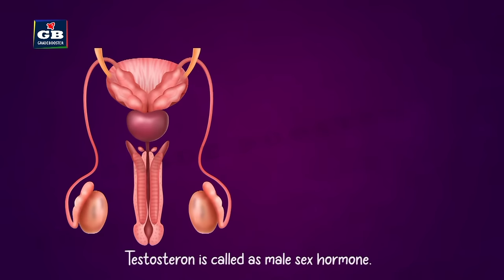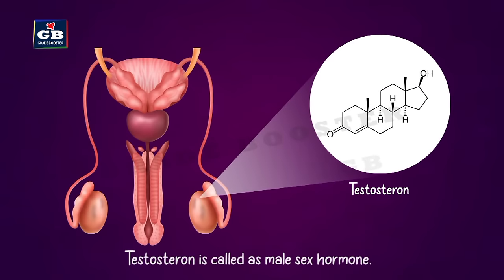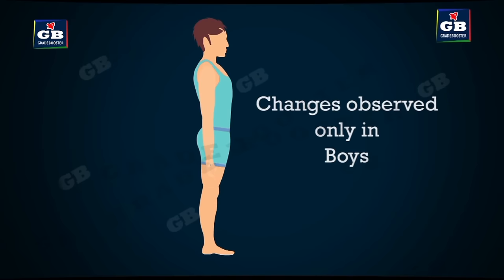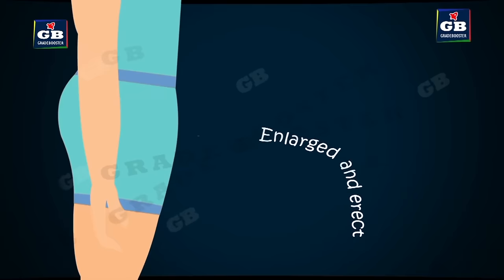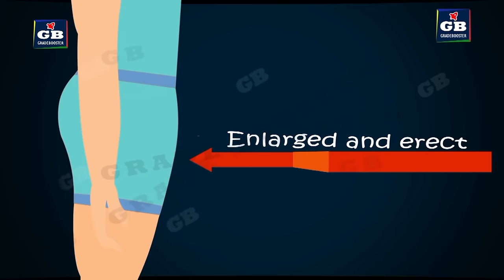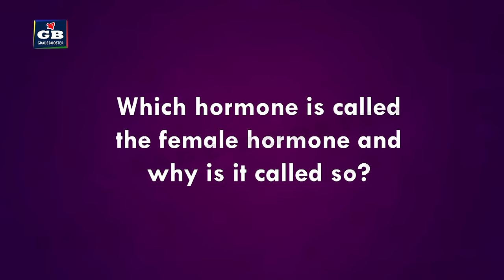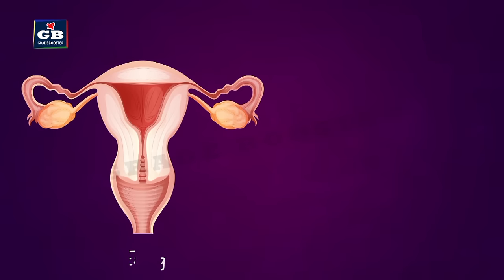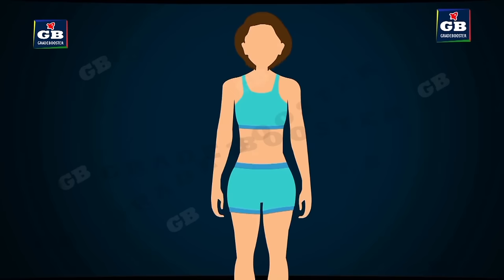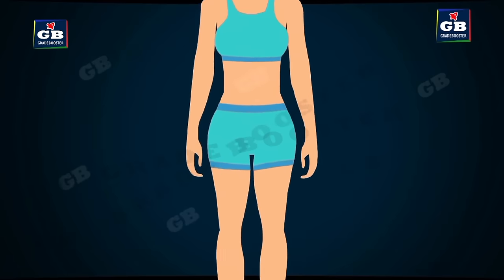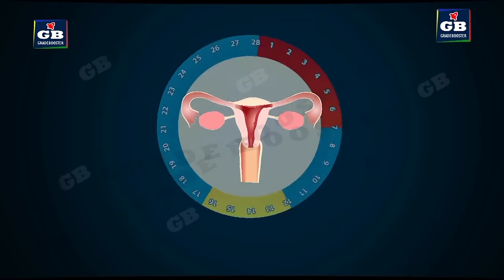Testosterone is called the male sex hormone because it helps in the development of secondary sexual characters in boys, such as growth of moustache, beard, development of testes, and sperm production. Estrogen is called the female sex hormone because it helps in the development of secondary sexual characters in females, such as development of breasts, beginning of menstruation, and development of ovaries.